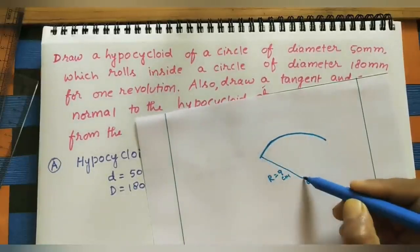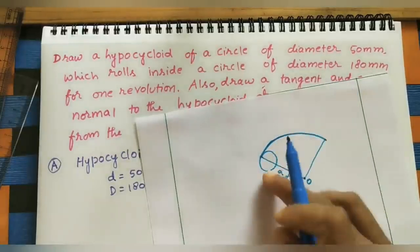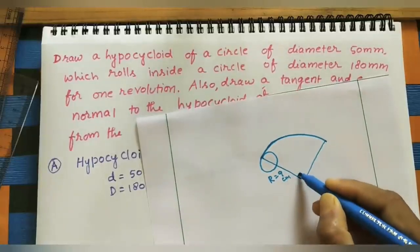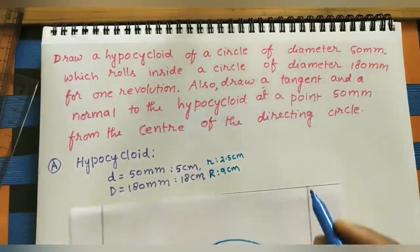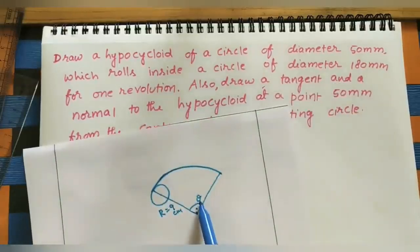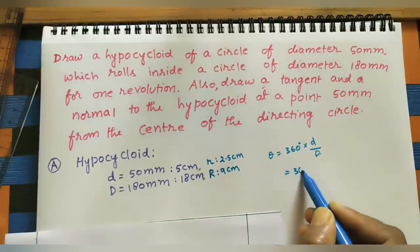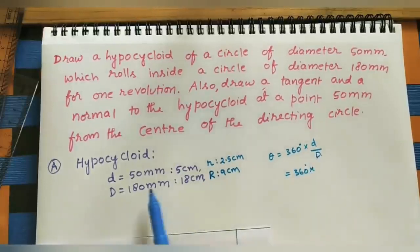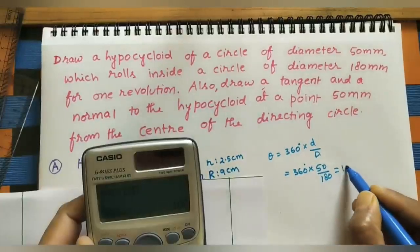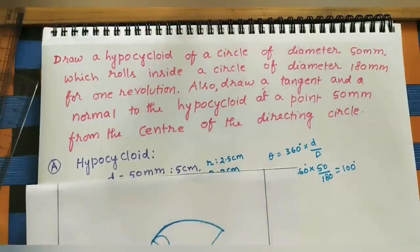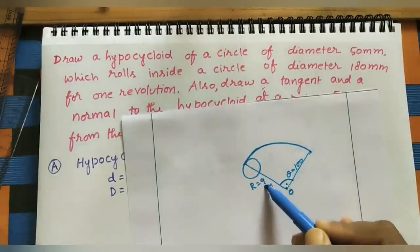For one complete rotation of the smaller circle, we use the formula: angle = 360° × (d / D) = 360° × (50 / 180) = 100°. So we draw a line, take 100 degrees, and draw another line of the same radius to form the bigger arc spanning 100 degrees.